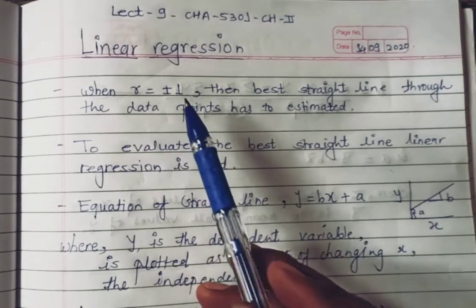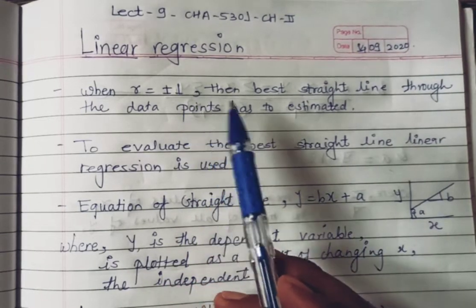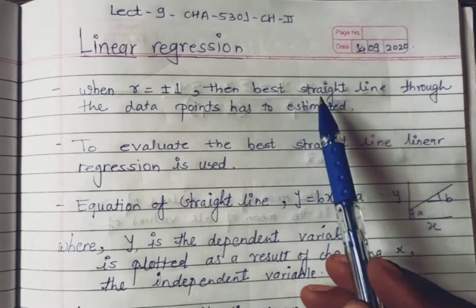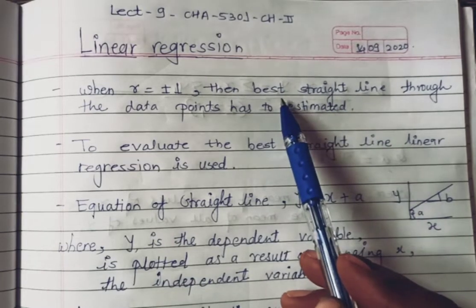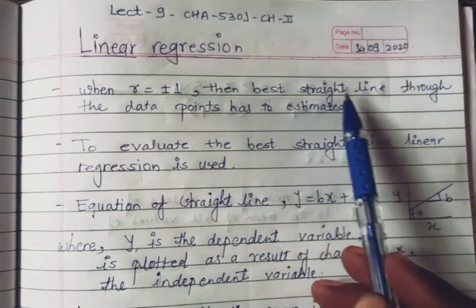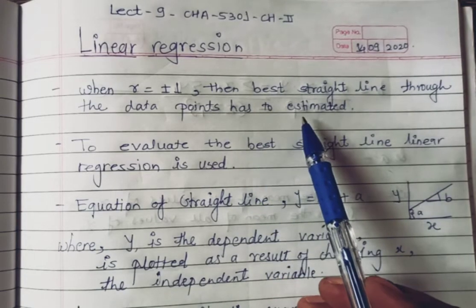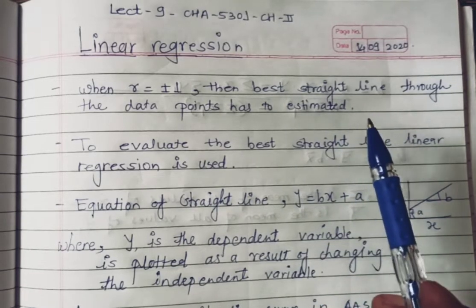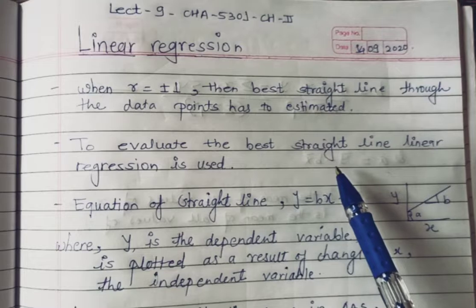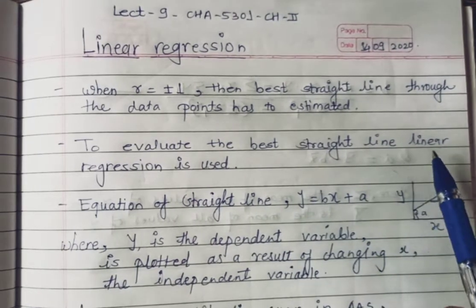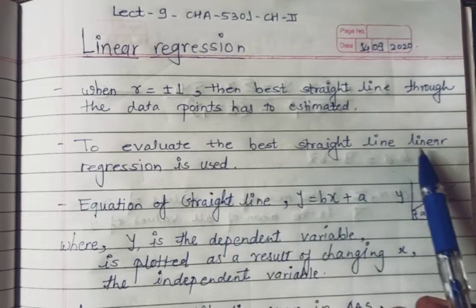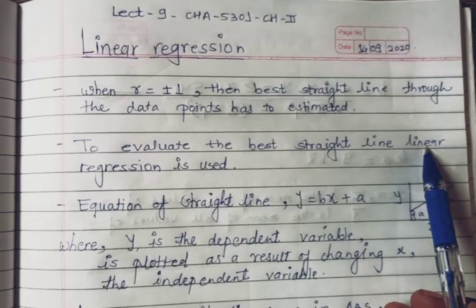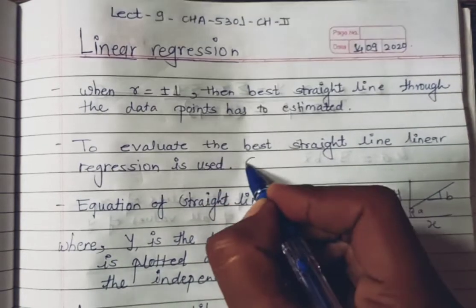From the r value we can identify a linear relationship, and when there is a linear relationship, y is directly proportional to x and we can find the best straight line through the given data points. Another method to find the linear relationship is the linear regression method, whose second name is the least squares method.